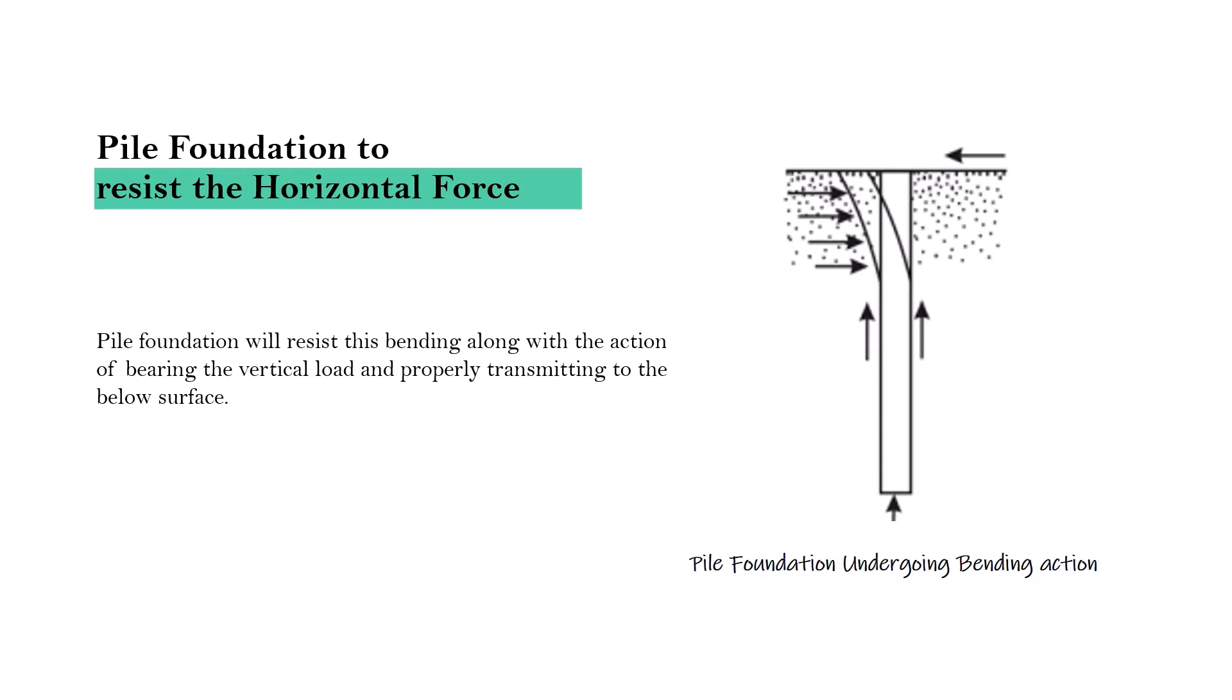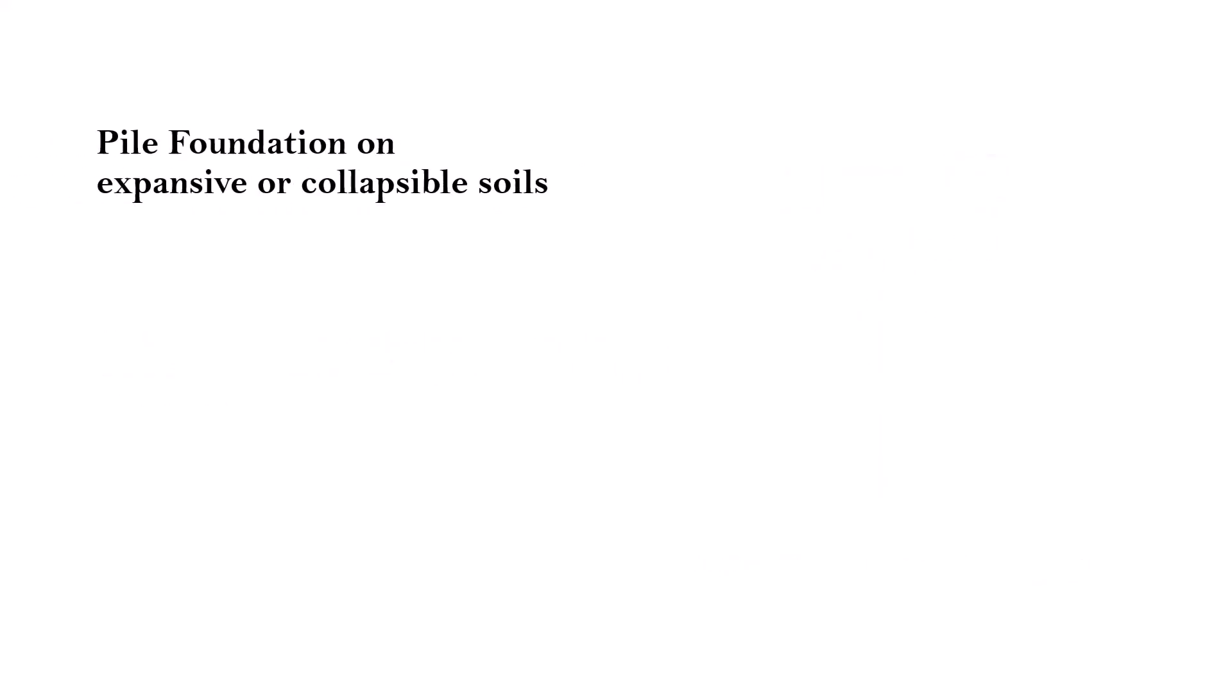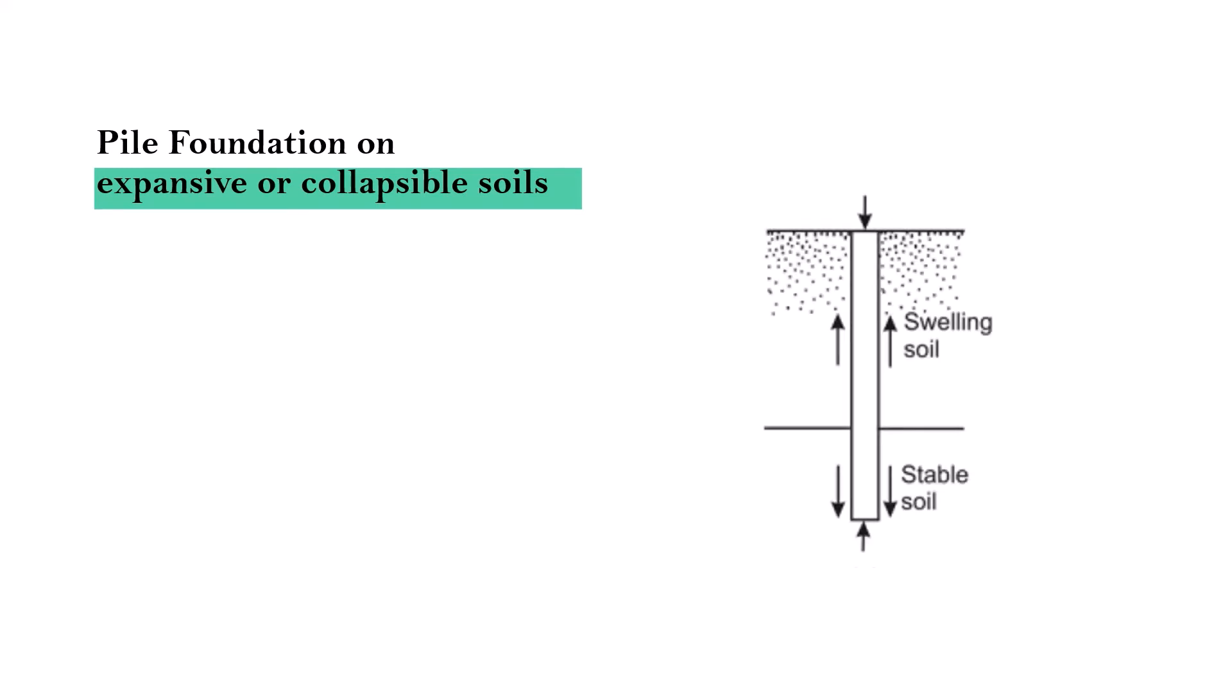Number three: Pile foundations are used where the site has expansive or collapsible soil. Depending on the site, it may have expansive or collapsing soil to a considerable depth. With radiation and moisture content, the expansive soil can either shrink or swell.